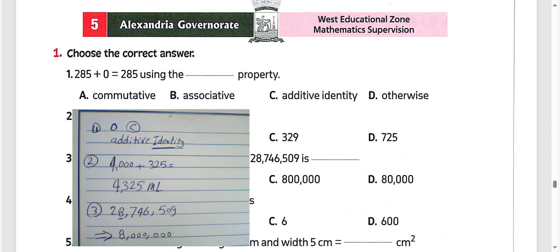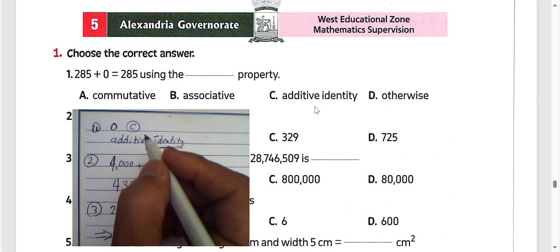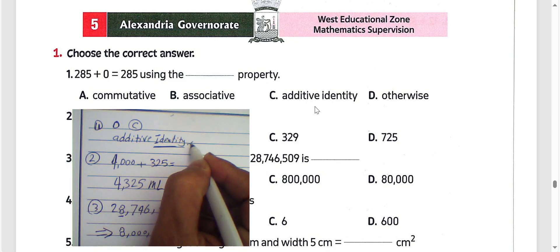Good. For today we'll solve model number 5 from Masterbook. Look at question number 1: 285 plus 0 equals 285, using additive identity. Choose letter C.